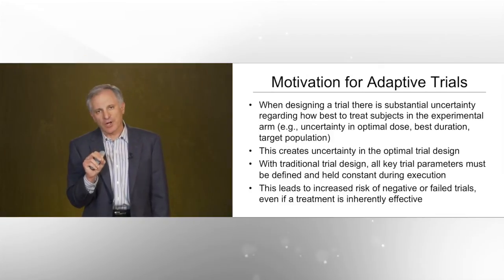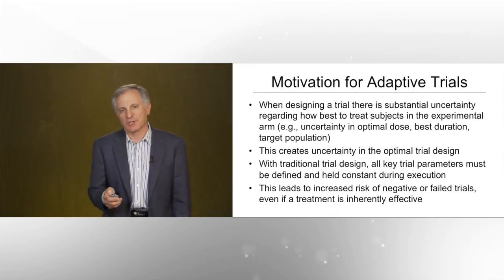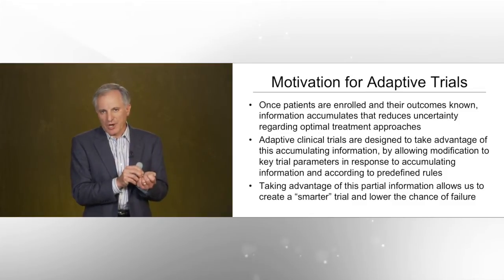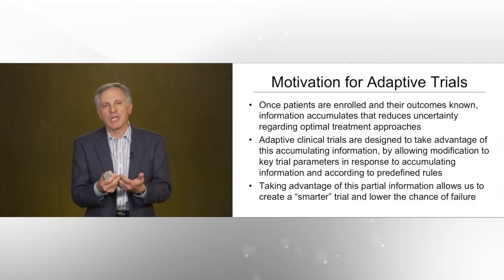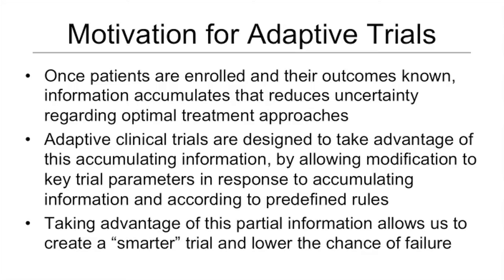This leads to increased risk of a negative or failed trial even if the treatment is inherently effective. A failed trial — one that fails to give a clearly positive or negative response — is perhaps the worst possible outcome after the investment in a clinical trial. However, once patients are enrolled and their outcomes start to become known, information accumulates that reduces uncertainty regarding optimal treatment approaches. Adaptive clinical trials are designed to take advantage of this accumulating information by allowing modification to trial parameters in response to accumulating data during the trial, according to predefined rules, creating a smarter trial and lowering the chance of failure.